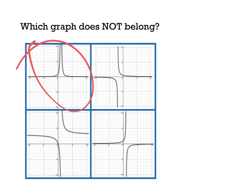My first student identified correctly that that was the one different from all the others. That's not even 1 over x — this is 1 over x, but here's where normally it would be. This one has been shifted to the left. I'm going to draw in the asymptotes — maybe that'll help you see it. That one got shifted to the right a little bit and up a little bit.